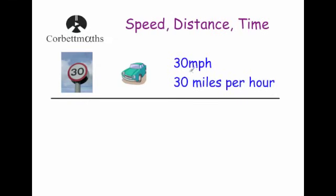In exam questions we'll often be looking at miles per hour — how many miles a car or lorry travels in an hour. We could also be looking at kilometers per hour, written as km/h. Or maybe even meters per second, for something like a sprint — how many meters they travel in a second. All of these speeds measure how far you travel in a certain amount of time, whether it's an hour or a second.